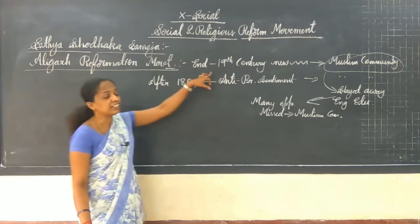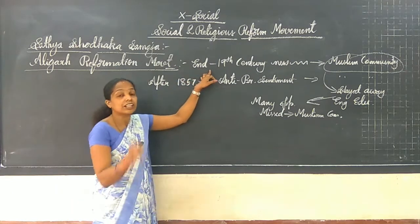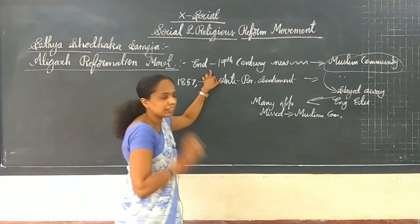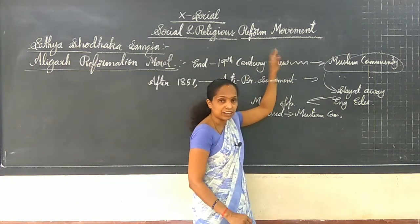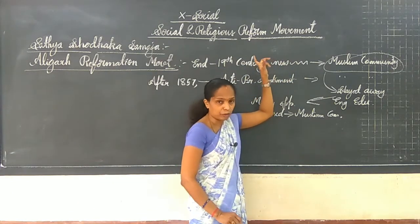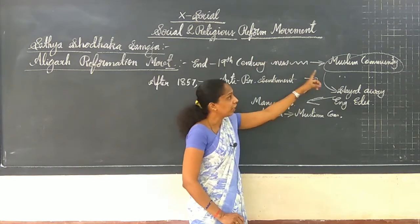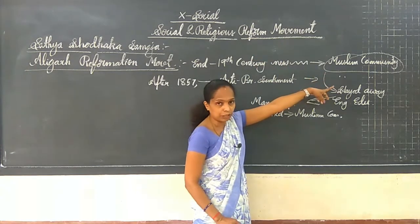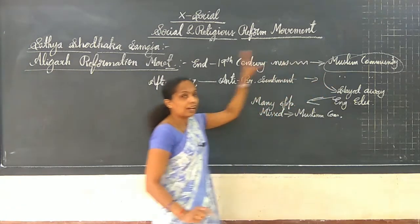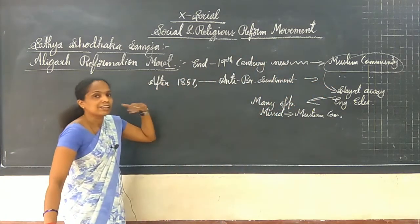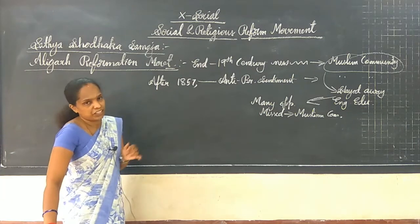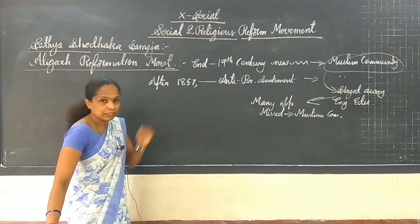During the late 19th century, there was a new wave of social and religious reformation movement in the Muslim community. And there became strong anti-British sentiment that came in the mind of the Muslim community.